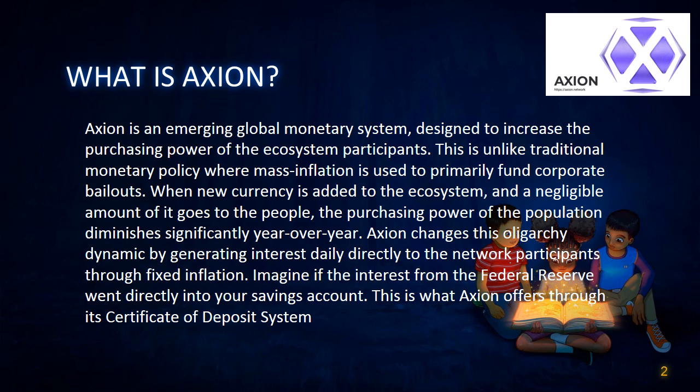This is unlike traditional monetary policy where mass inflation is used to primarily fund corporate bailouts. When new currency is added to the ecosystem, only a negligible amount of it goes to the people, and the purchasing power of the population diminishes significantly year over year. Axion changes this oligarchy dynamic by generating interest daily directly to network participants through fixed inflation.